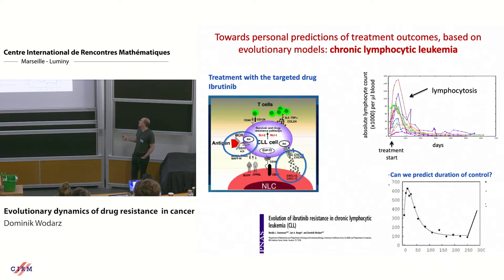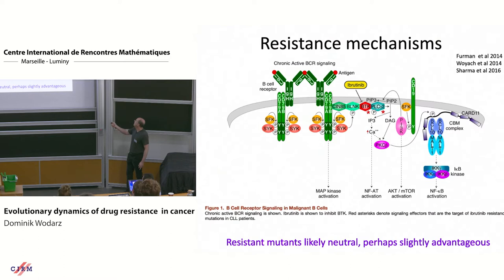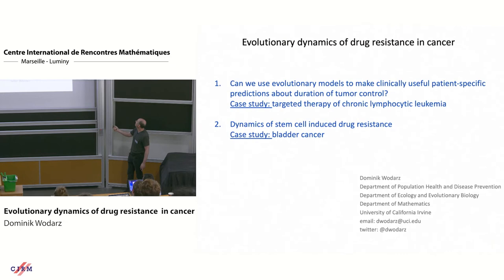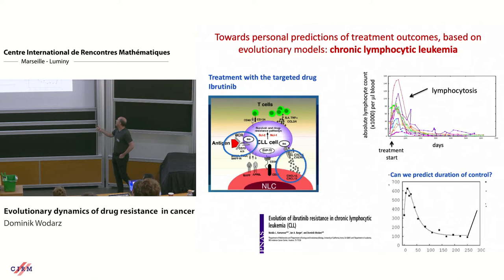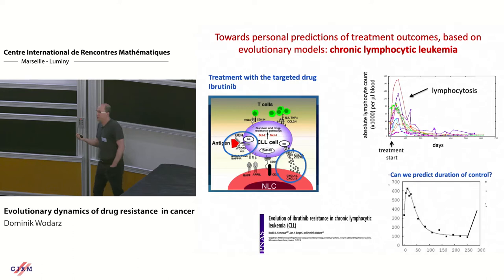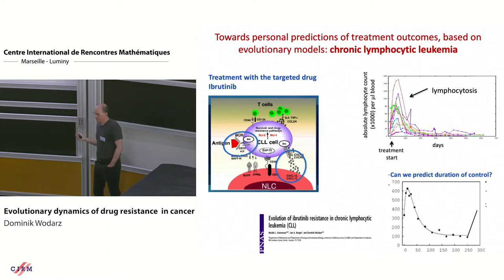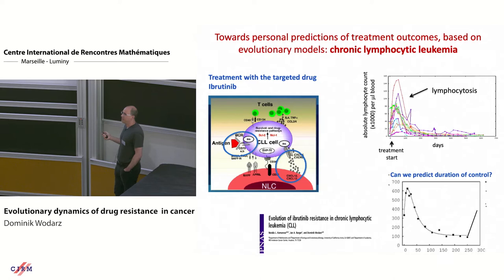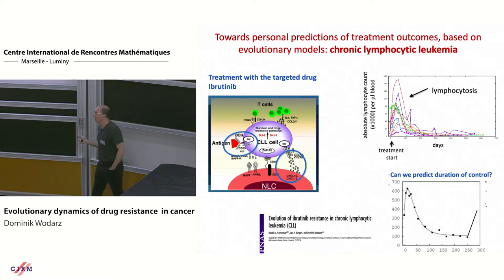The increase happens because the cells get flushed out of the tissues. You give the drug, it interferes with the interaction with the microenvironment, so they can't stay in the tissues anymore - they get flushed into the blood. Then they die, and then they stabilize. It's unclear why they stabilize and are not driven further down - that's subject to research. Many patients are being treated for long periods and doing well, but over time more and more patients start to relapse. This relapse is driven by the emergence of drug-resistant mutants. We wanted to ask: can we predict how long this treatment is going to be successful, and when can we expect the rise due to drug resistance?